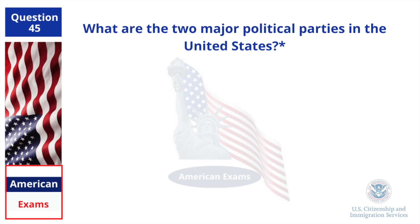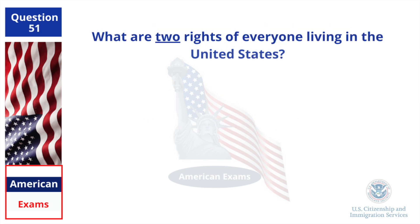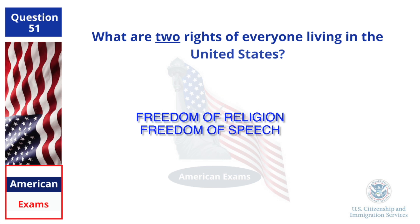What are the two major political parties in the United States? Democratic and Republican. What are the two rights of everyone living in the United States? Freedom of religion. Freedom of speech.